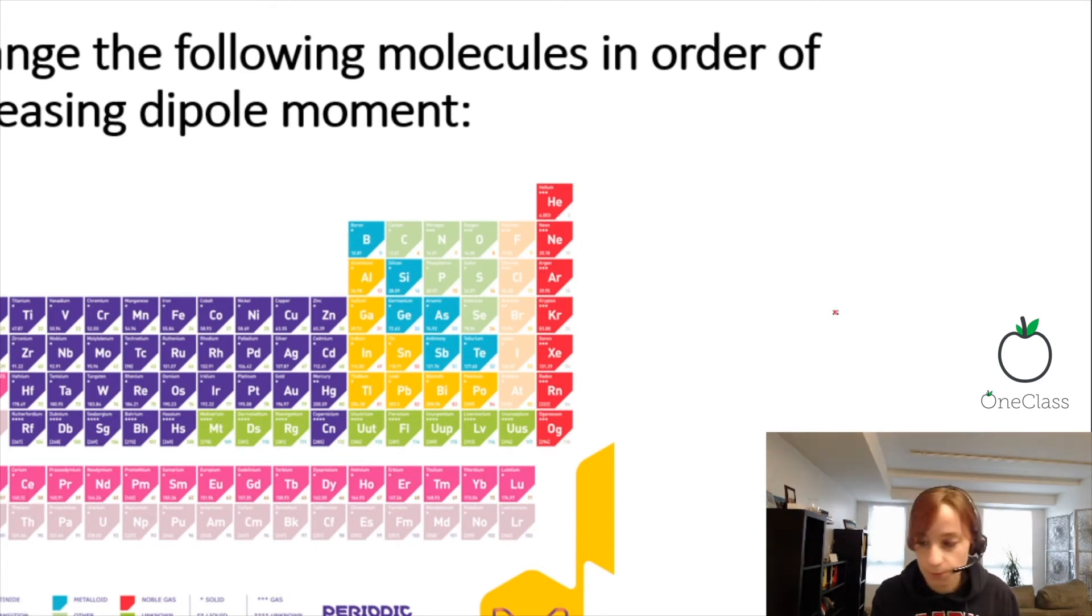We are looking at tellurium, selenium, sulfur, and oxygen. We're just going to look at these four elements. Where they are placed in the periodic table indicates their electronegativity.